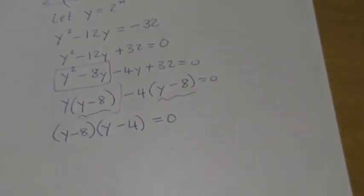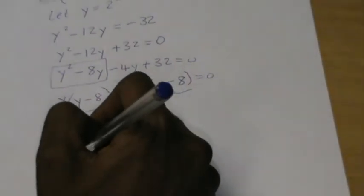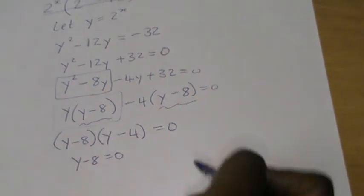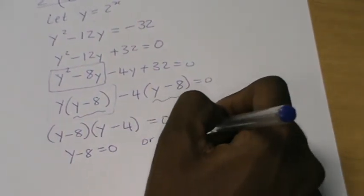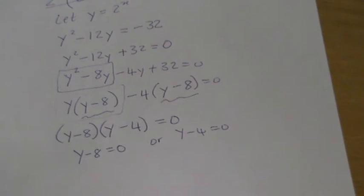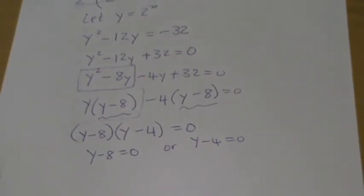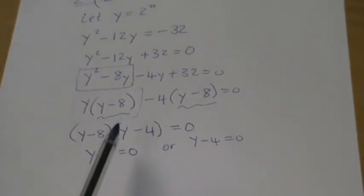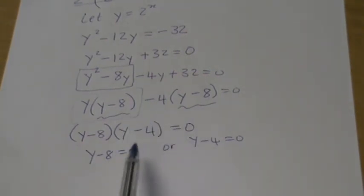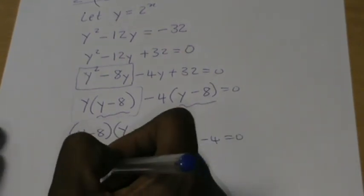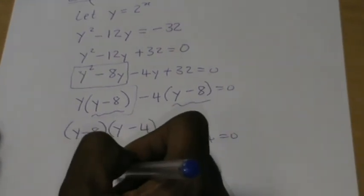When we see that (y minus 8) appears in both brackets, it is also a common factor. Taking it out gives (y minus 8)(y minus 4) equals zero. Now we apply the zero product rule: this is only valid when the product equals zero. So y minus 8 equals zero, or y minus 4 equals zero, giving y equals 8 or y equals 4.